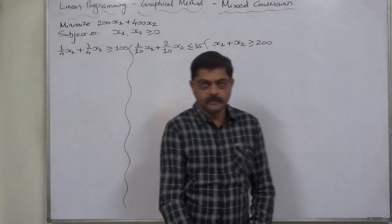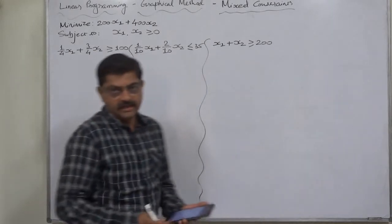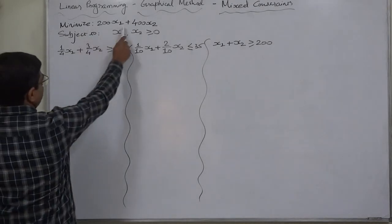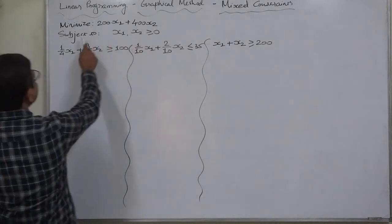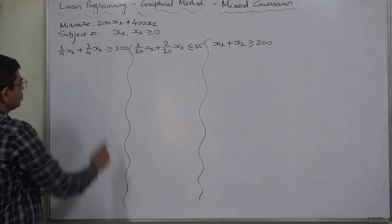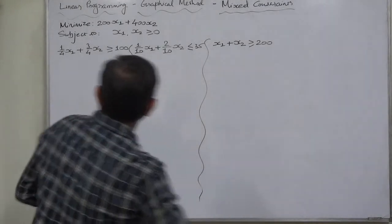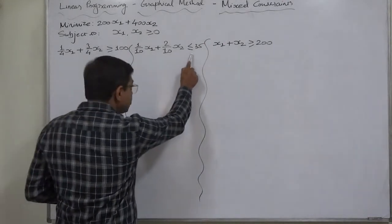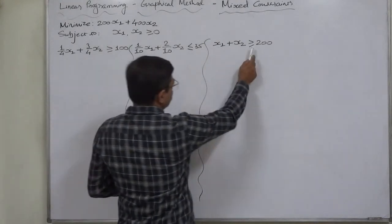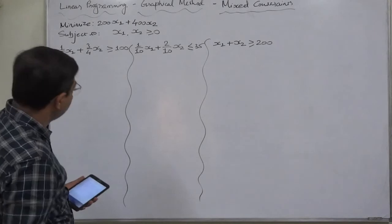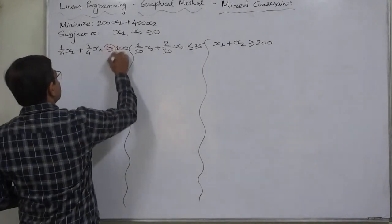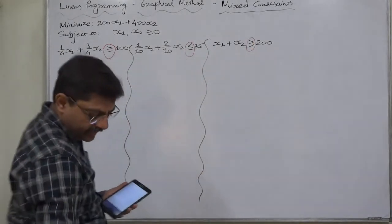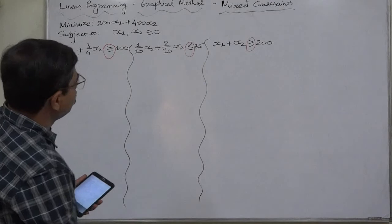Namaskar, hello and welcome. A new case in linear programming: solution through the graphic method. The case is: minimize 200x1 plus 400x2, subject to (1/4)x1 plus (3/4)x2 greater than or equal to 100, (1/10)x1 plus (2/10)x2 less than or equal to 35, and x1 plus x2 greater than or equal to 200. This is a case with mixed constraints.